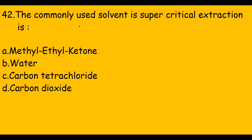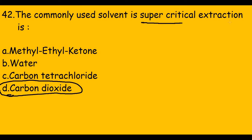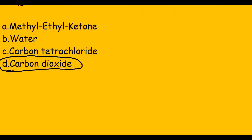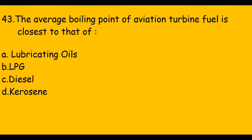This question asks the commonly used solvent in supercritical extraction — the answer is carbon dioxide. This is the most common solvent for supercritical extraction. The next question asks the average boiling point of aviation turbine fuel is closest to that of — the answer is kerosene.